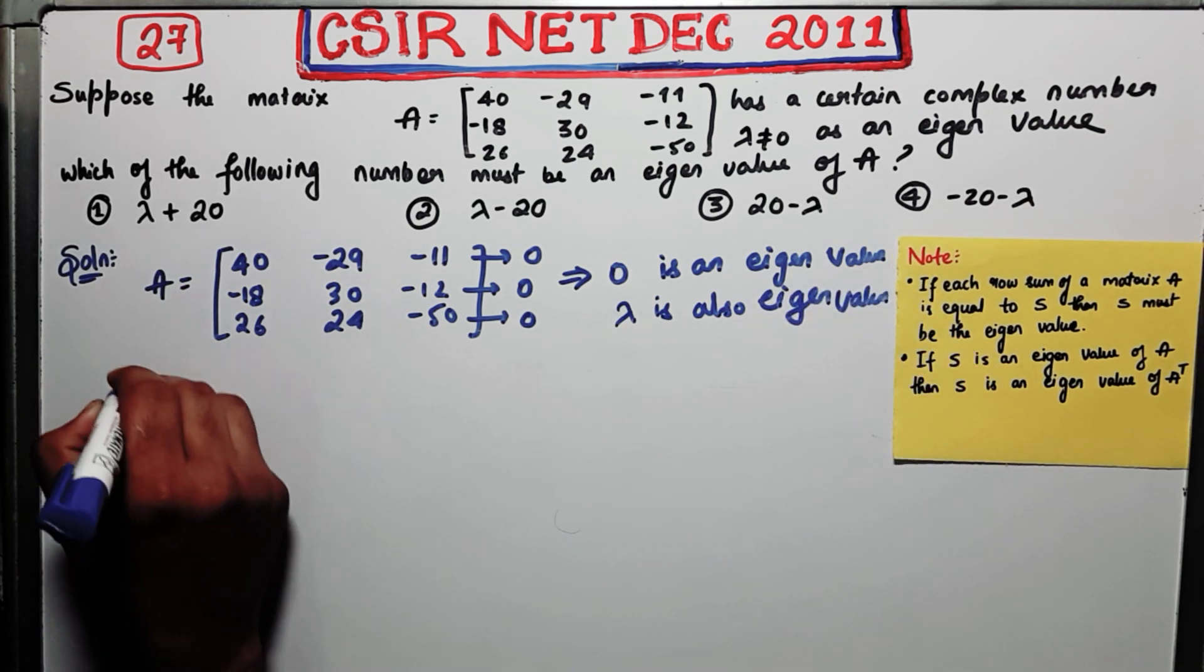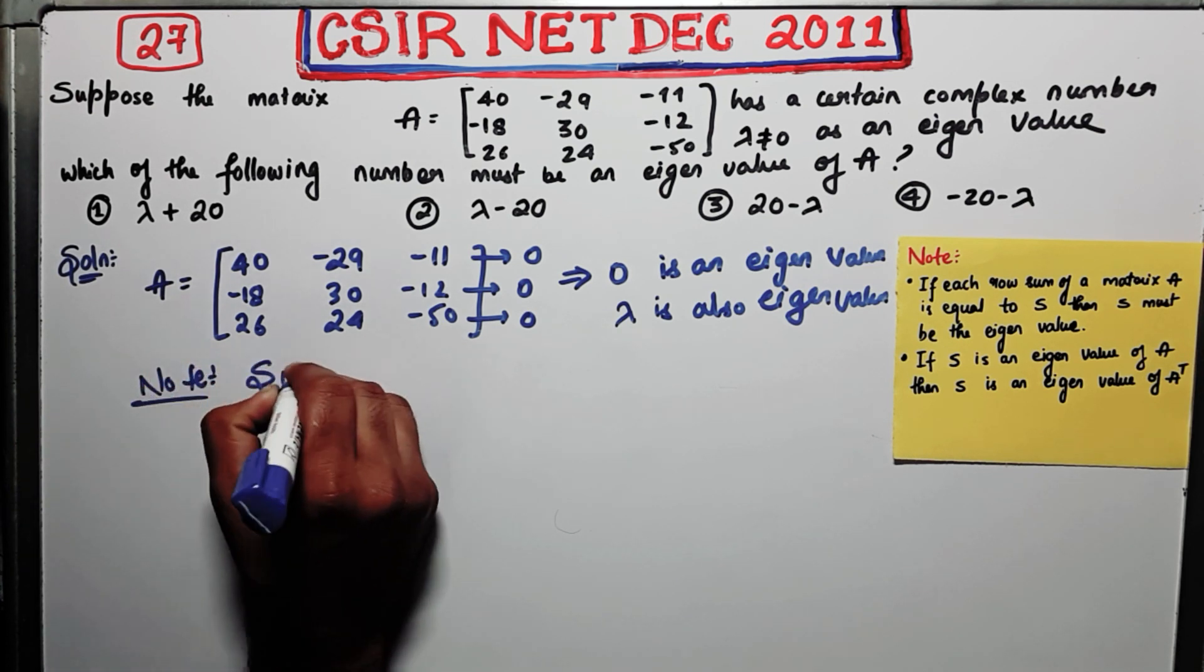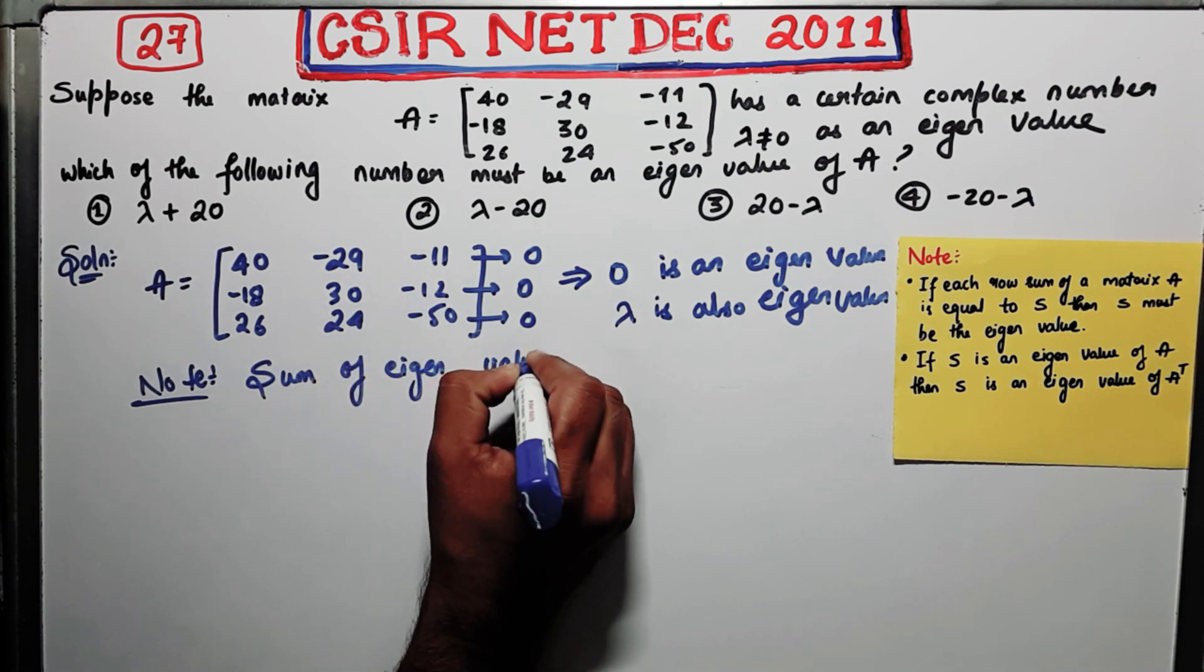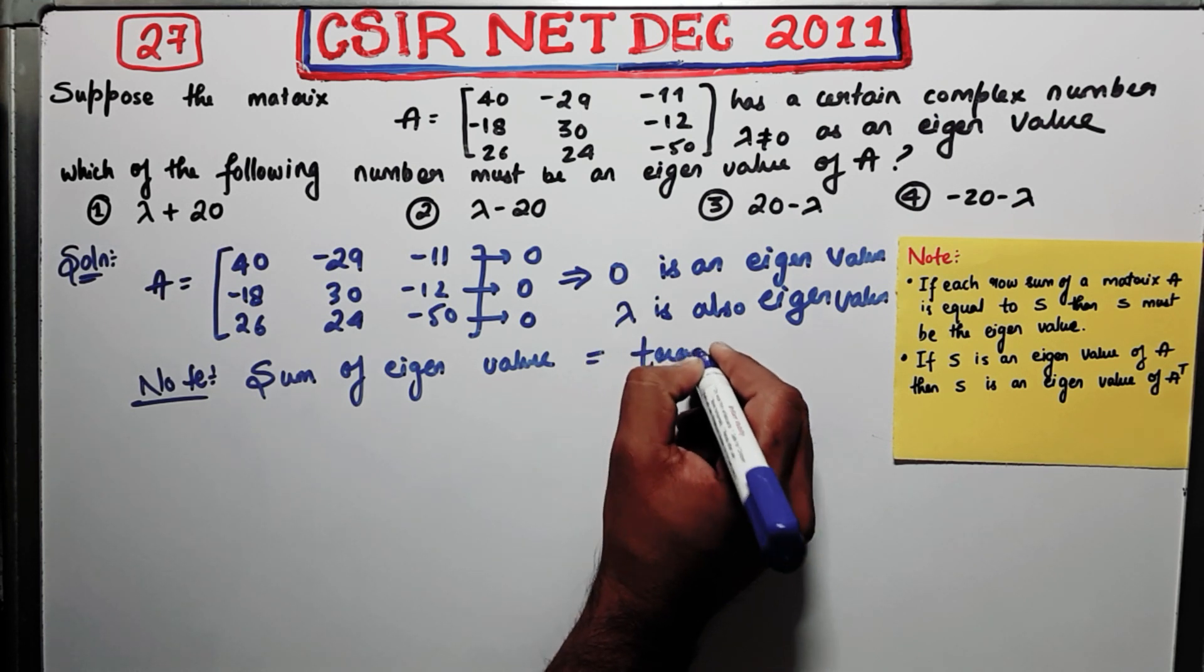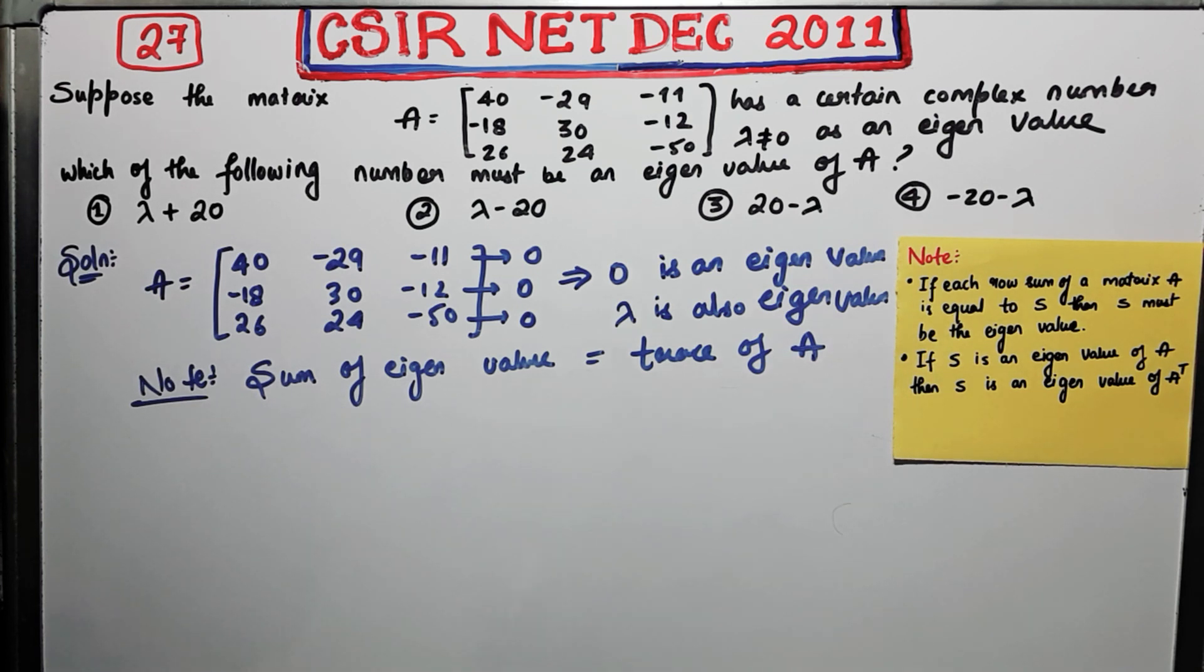Now you know what, you know this fact that sum of eigenvalues is equal to trace of capital A. This is what you already know, that if you sum all the eigenvalues, then you are going to get a trace.